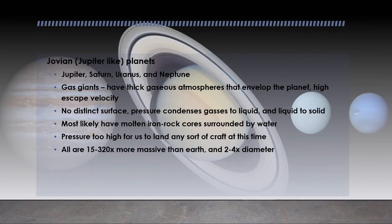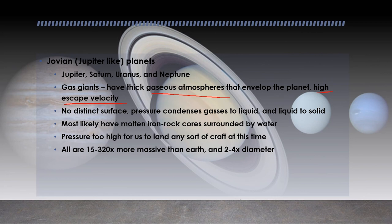The Jovian planets — Jupiter, Saturn, Uranus, and Neptune — are known as gas giants for their thick gaseous atmospheres and have very high escape velocity. They have no distinct surface; instead, their atmospheres thicken with depth until they form a liquid and eventually a solid. Their core is believed to be molten iron-rock surrounded by water, but current technology cannot withstand the crushing pressures to land anything there. These planets are 15 to 320 times more massive than Earth and two to four times its diameter.